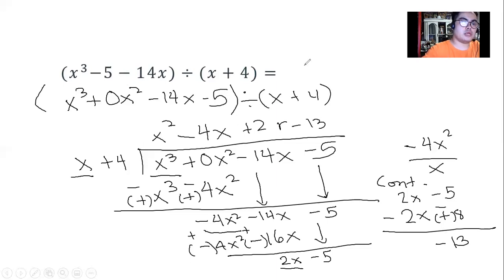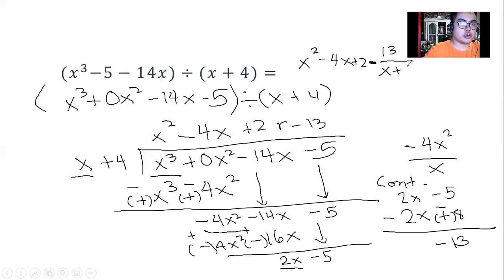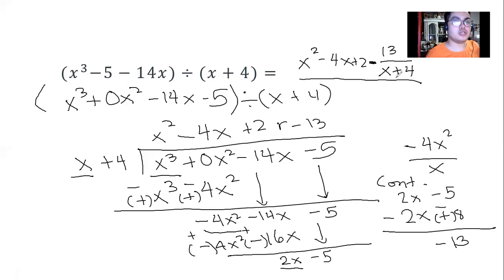We state the quotient, and since our remainder is negative 13, we write minus 13 over the divisor as the remainder fraction. That is the final answer for this question. Thank you guys, happy learning, God bless you — don't forget to subscribe to my channel and watch my videos. If you have any questions, feel free to ask!